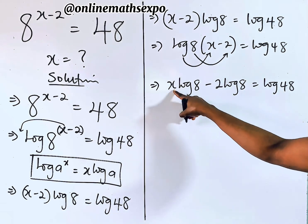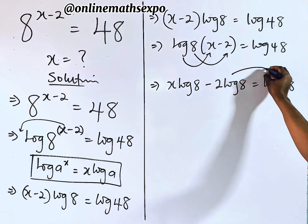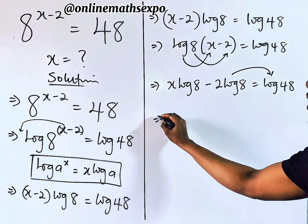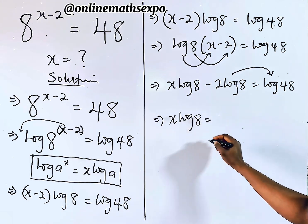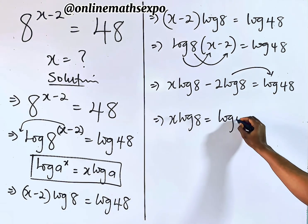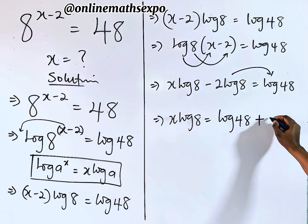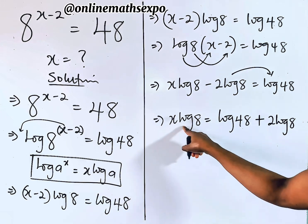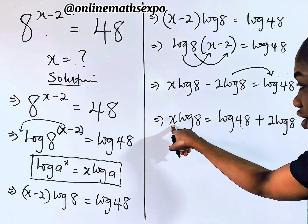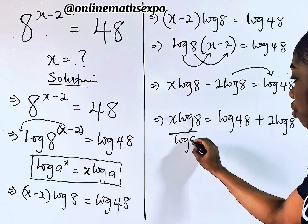Our target is x. To isolate it, we add 2·log(8) to both sides. So we have x·log(8) is equal to log(48) plus 2·log(8). Now these two terms are multiplying x, so to get x alone, divide both sides by log(8).